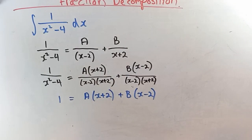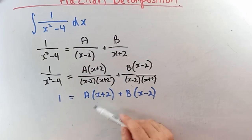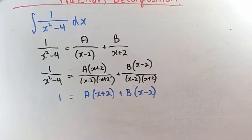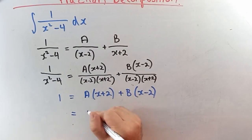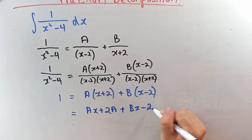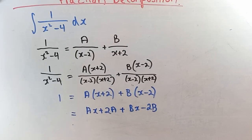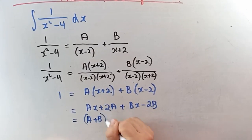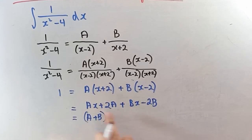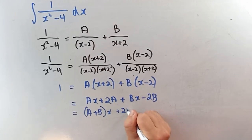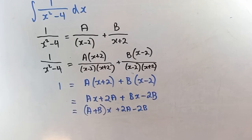One way to solve for a and b is to expand and compare coefficients. Expanding gives ax plus 2a plus bx minus 2b. The x coefficients give ax plus bx, and the constant terms give 2a minus 2b.